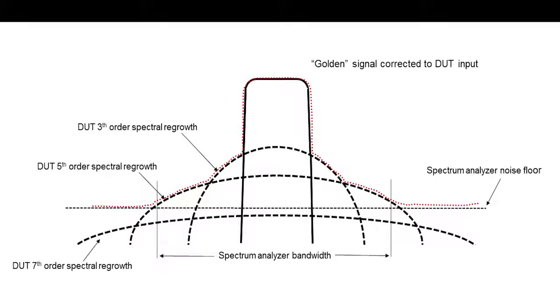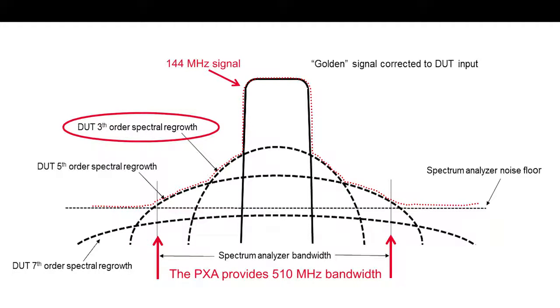One example would be digital pre-distortion. If the modulated signal is 144 MHz and the third order nonlinear impacts will be used in the signal conditioning, the PXA would provide 510 MHz of analysis bandwidth. That's enough bandwidth to capture the 144 MHz wide modulated signal along with the third order spectral regrowth components.